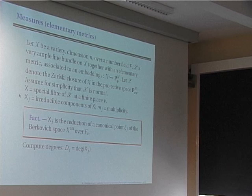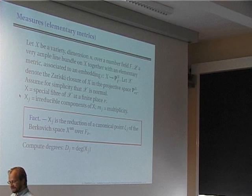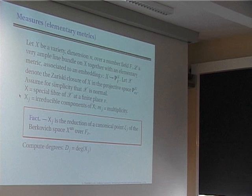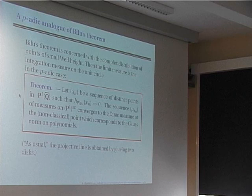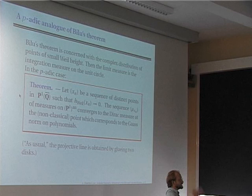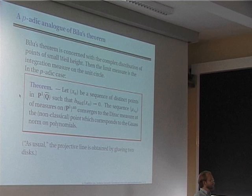So the analog of Bilu's theorem gives a convergence theorem, but the limit measure is a Dirac measure at this new point — the Gauss point. That's why one had to introduce Berkovich spaces. In general there is a full p-adic equidistribution theorem, and to describe it I have to show how to define measures.